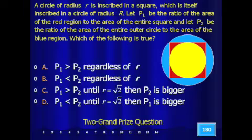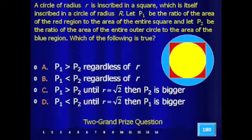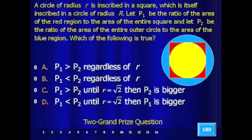All right, here we go, for $2,000: a circle of radius r is inscribed in a square, which is itself inscribed in a circle of radius capital R. Let P sub 1 be the ratio of the area of the red region to the area of the entire square, and let P sub 2 be the ratio of the area of the entire outer circle to the area of the blue region. Which of the following is true?